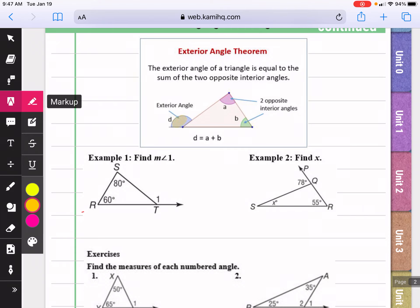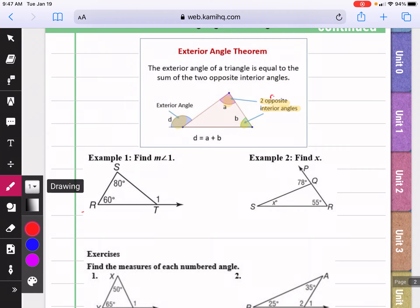So if you look here at exterior angle D, the angles that are opposite interior would be A and B. So you would add those up. Another name for opposite interior would be remote interior angles. So they're just the ones that are not adjacent to, not touching the angle that's on the outside.